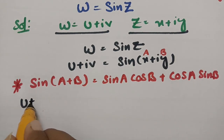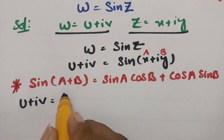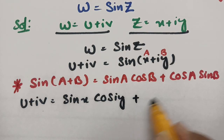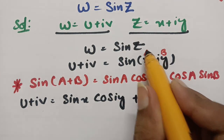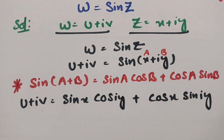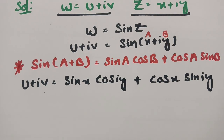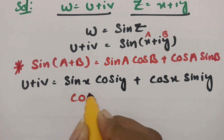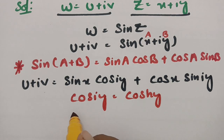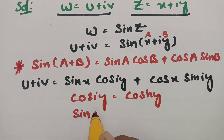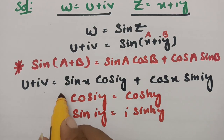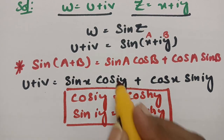Then u + iv = sin(x)·cos(iy) + cos(x)·sin(iy). We apply two important identities: cos(iy) = cosh(y) and sin(iy) = i·sinh(y). We substitute these here.